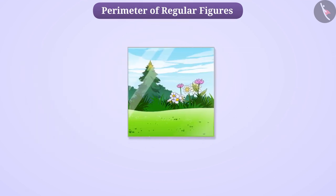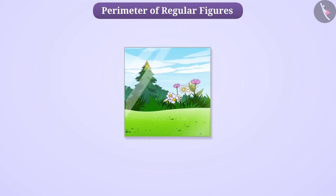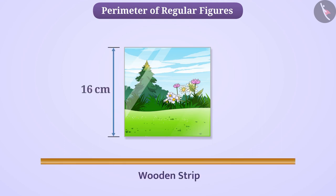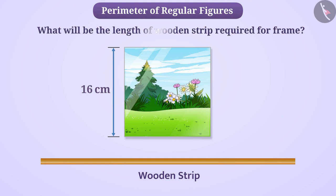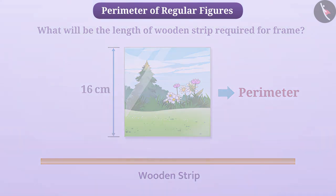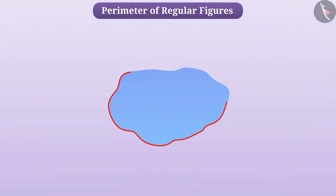Suppose we have to frame a square photo of 16 cm side with a wooden strip. For this, we have to find out what will be the length of wooden strip required. To find out, we have to find the perimeter of the square photo. The distance travelled along the edge of a shape is called the perimeter of that shape.